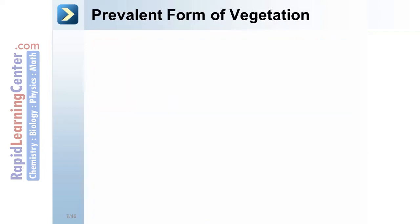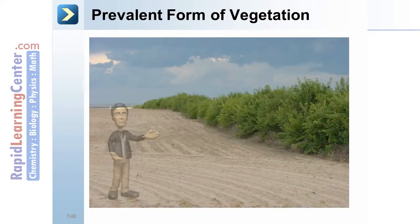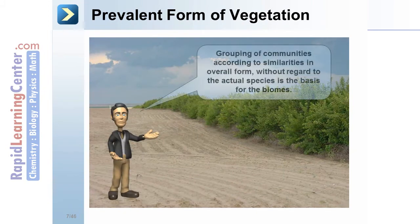The prevalent form of vegetation is a grouping of communities according to similarities in overall form without regard to the actual species. It is the basis for the biomes.